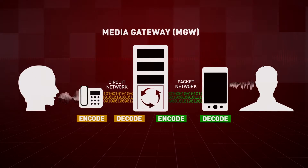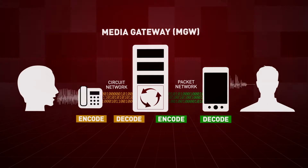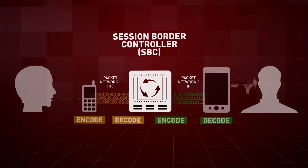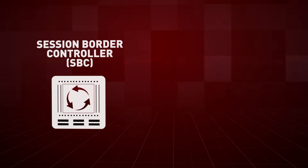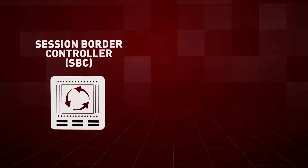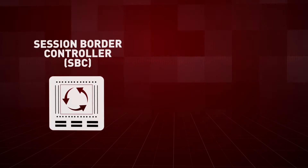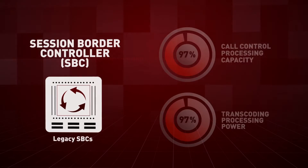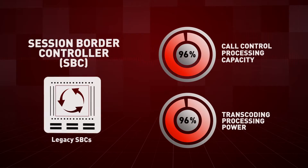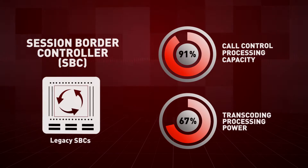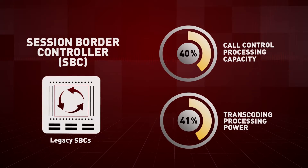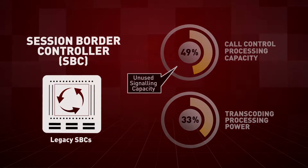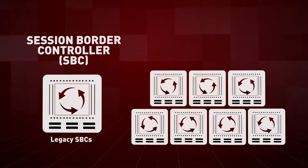Usually, transcoding is performed at network boundaries in media gateways for legacy circuit networks, or session border controllers in all-IP environments. The problem is that the installed base of media gateways and SBCs were never designed for the latest audio codecs or HD video. As a result, the system session capacity is reduced as the computational requirements to transcode modern codecs increases, leading to stranded and unused call processing capacity and the need to buy many more SBCs.